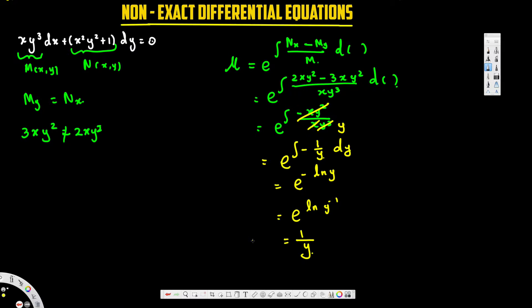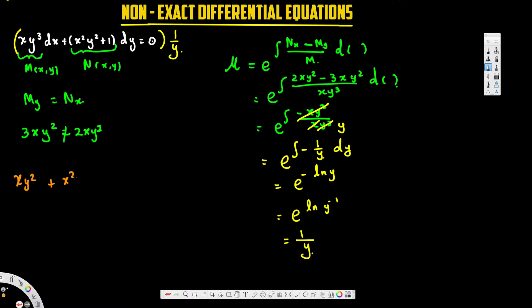After finding the integrating factor, we multiply everything by 1/y. Multiplying M = xy³ by 1/y gives xy². Multiplying N = x²y² + 1 by 1/y gives x²y + 1/y. So our new equation has M = xy² and N = x²y + 1/y, with dx and dy terms.